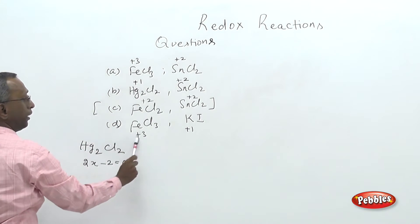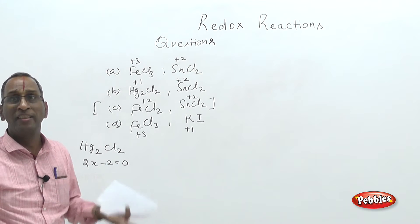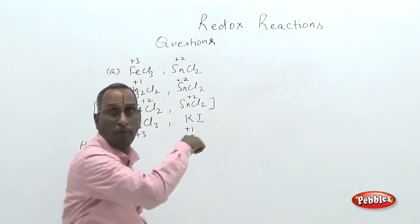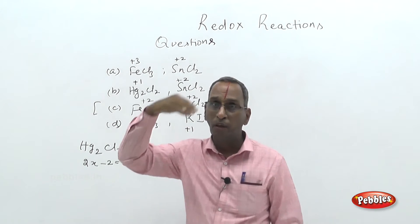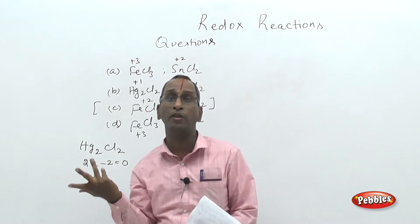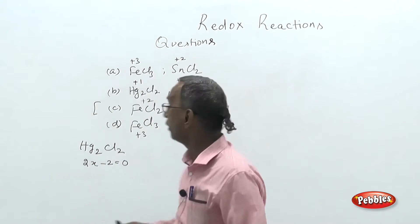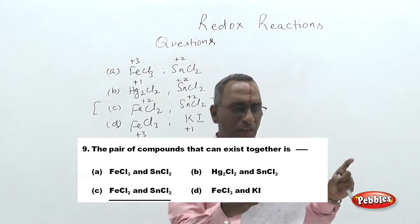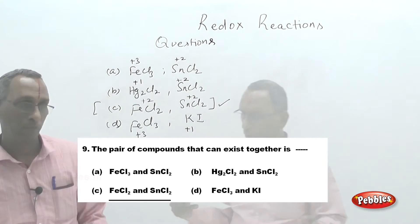When there is a change in oxidation state, there is a possibility of a redox reaction, and such a pair cannot exist together. Only Choice C — ferrous chloride (FeCl₂) and stannous chloride (SnCl₂) — both have iron at plus 2 and tin at plus 2. Same oxidation state means neither acts as oxidizing nor reducing agent, so the system will not undergo any reaction and they exist together. Choice C is the correct answer.